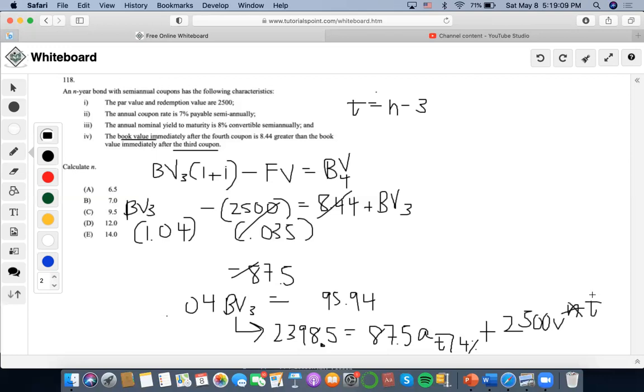Okay but anyway at the end of the day we don't know what n is but we do know this, so I can use my calculator right now and I can just solve this problem. So I can do 2398.5 as the present value, 87.5 as the payment, 4 as the interest rate, 2500 as future value. Number of years 10.